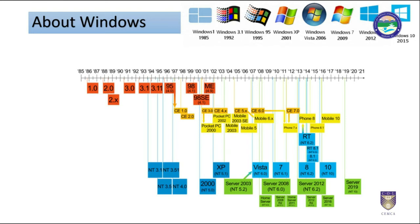In 1995, Windows 95 was released, which only used MS-DOS as a bootstrap. For backward compatibility, Win 9x could run real-mode MS-DOS and 16-bit Windows 3.x drivers. Windows ME, released in 2000, was the last version in the Windows 9x family. Later versions have all been based on the Windows NT kernel. Server editions of Windows are widely used, and in recent years Microsoft has expended significant capital to promote the use of Windows as a server operating system.